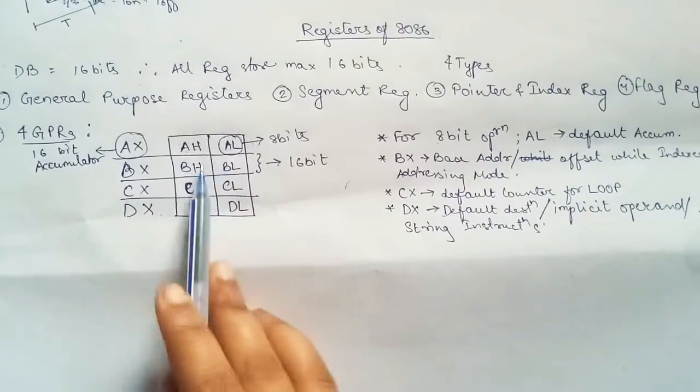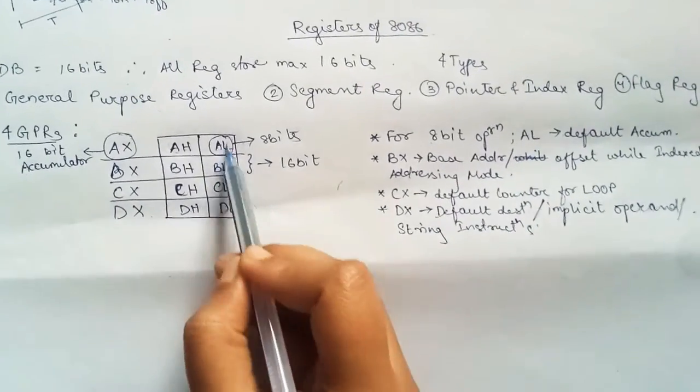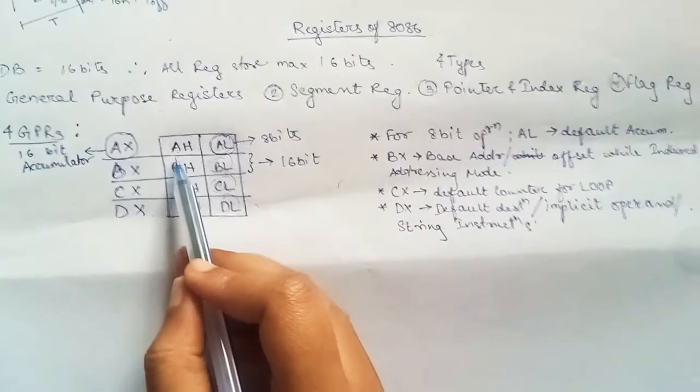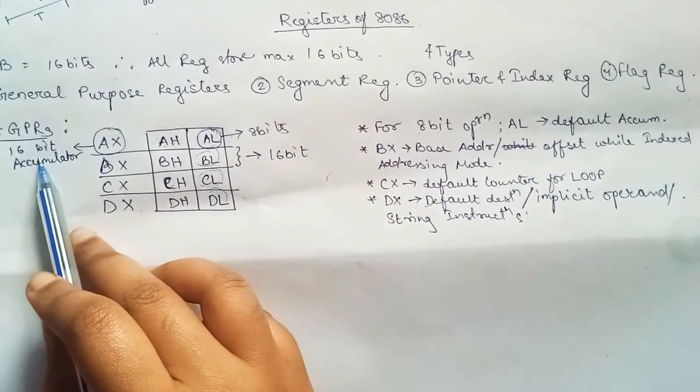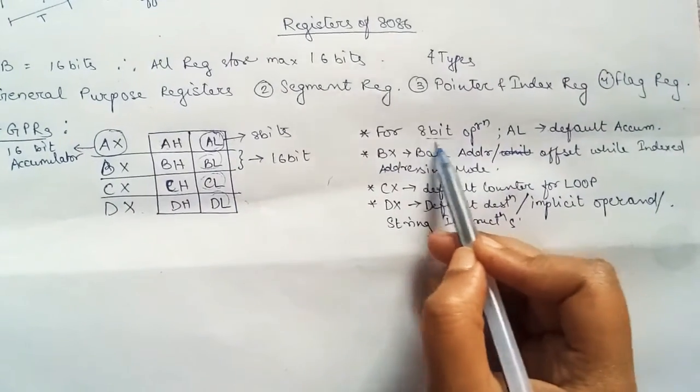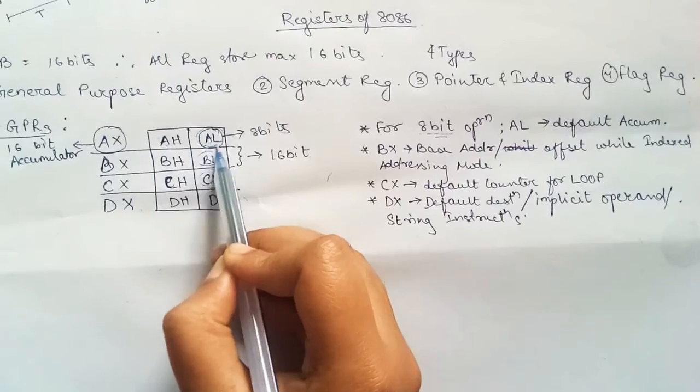This whole is of 16 bits and each box is of 8 bits. So AX acts as the default accumulator 16-bit, and if we have any 8-bit operation, for that AL will act as the default accumulator for 8-bit operations.